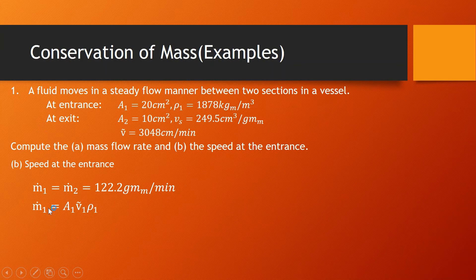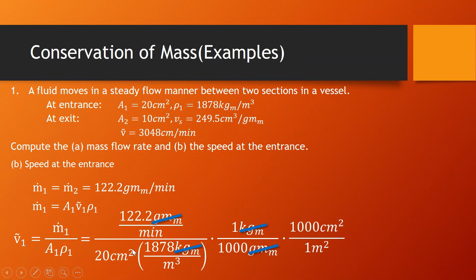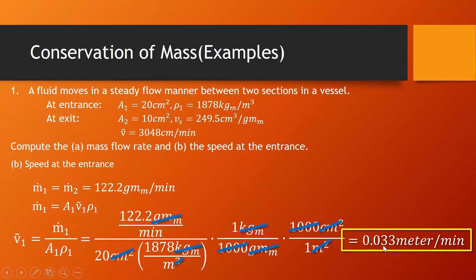Since Ṁ₁ = Ṁ₂ = 122.2 g-mass/min, we substitute into the mass flow rate formula to find the average speed at the entrance. Mass flow rate is 122.2, area is 20 cm², and density is 1878. We convert grams to kilograms and centimeters to meters, canceling units accordingly. One unit of meters remains, giving a final answer of 0.033 meters per minute for the entrance speed.